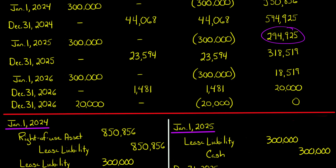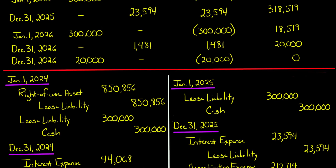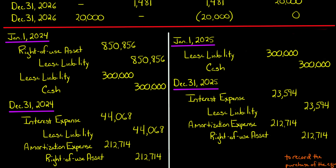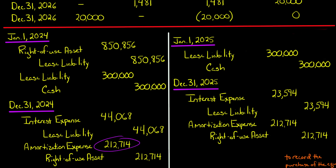At that point, the lessee also has to debit an asset account — like equipment — to put this asset on their books. The amortization expense is just the right-of-use asset divided by four: $212,714. You make that entry for four years because you're amortizing over the four-year economic life, not the three-year lease term. This amortization entry is going to be made at the end of 2024 and at the end of 2025.